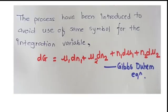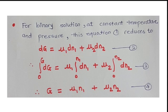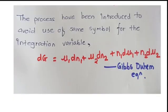Now, taking n_1 and n_2 as constant and allowing chemical potential to vary, we differentiate G equals mu_1 n_1 plus mu_2 n_2 again. Adding this to equation number two — dG equals mu_1 dn_1 plus mu_2 dn_2 — and collecting terms gives: mu_1 dn_1 plus mu_2 dn_2 plus n_1 d mu_1 plus n_2 d mu_2. This overall equation is known as the Gibbs-Duhem equation.